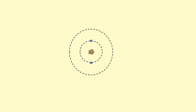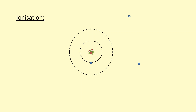We've got an atom here with the nucleus and the electrons in the energy levels. Sometimes what can happen is a free electron can collide with these atomic electrons and transfer its kinetic energy to the atomic electron. And if it gains enough kinetic energy, the atomic electron will leave the atom completely. This is one of the ways in which ionization can occur.